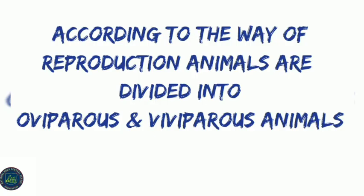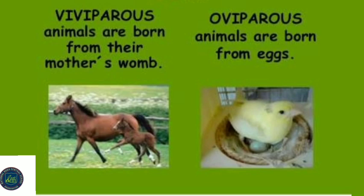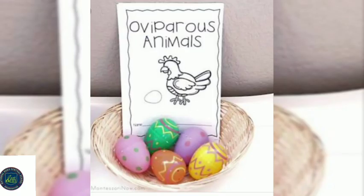According to the way of reproduction, animals are divided into oviparous and viviparous. Viviparous animals are born from their mother's womb and oviparous animals are born from eggs. Let us study one by one.